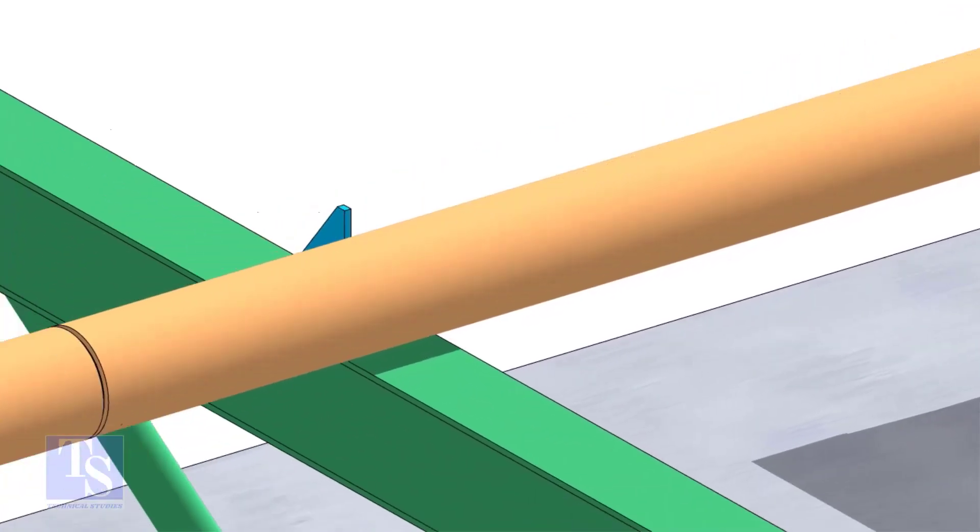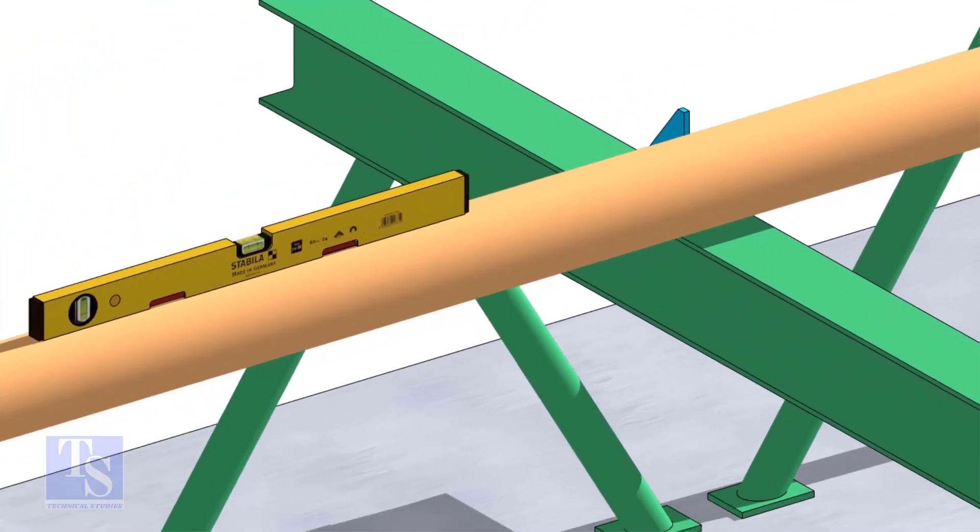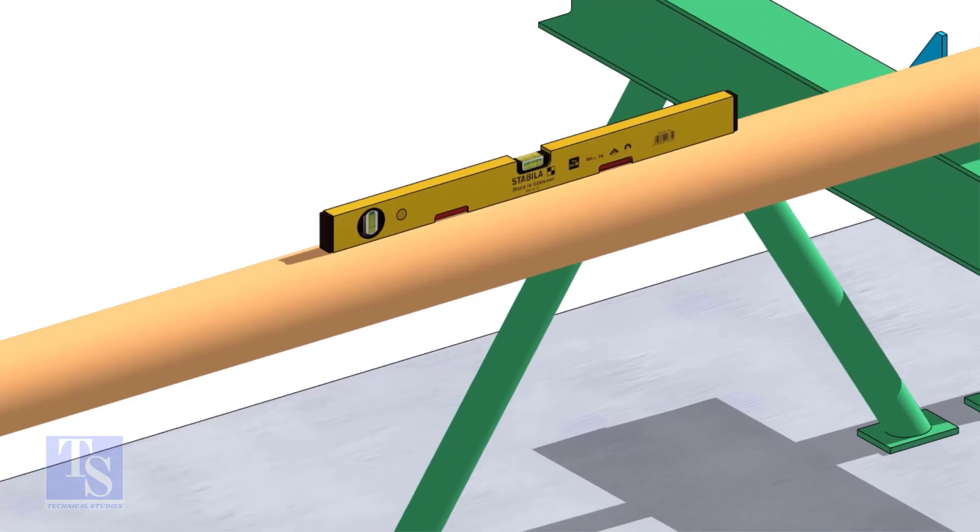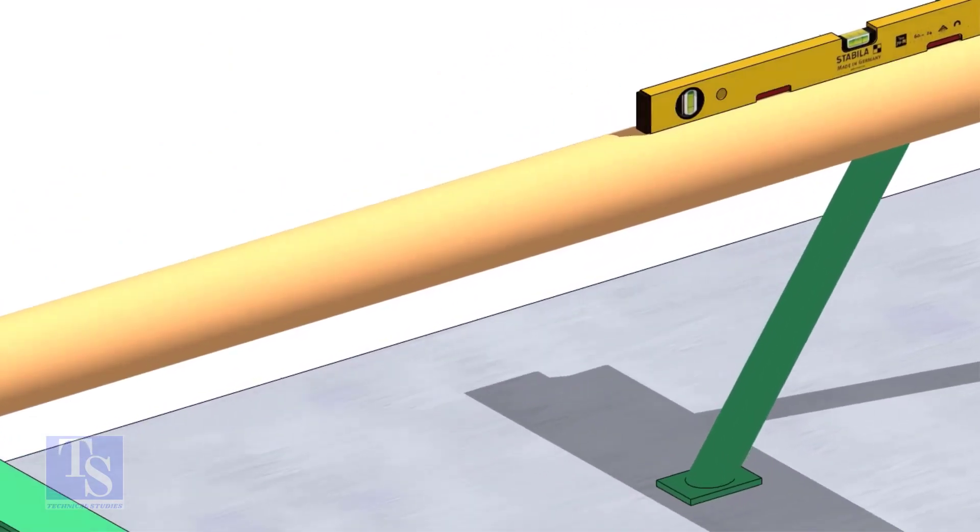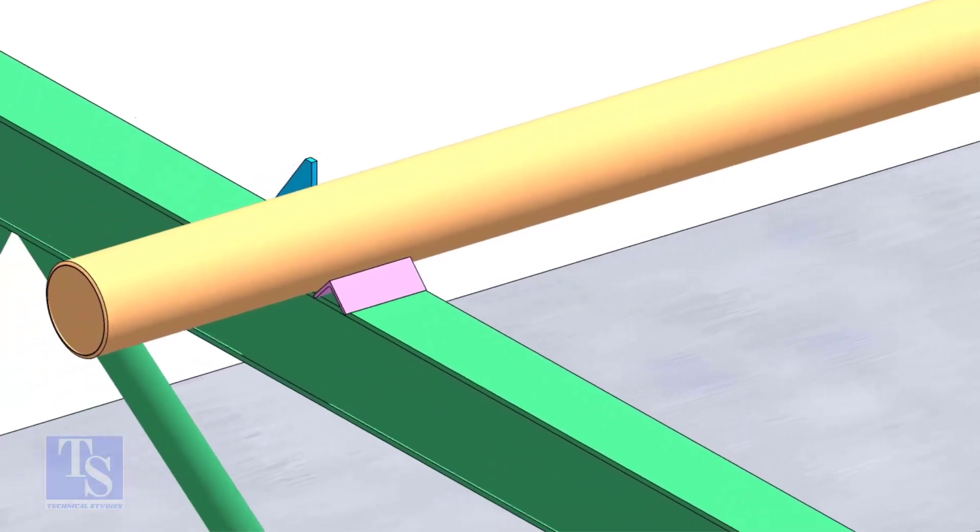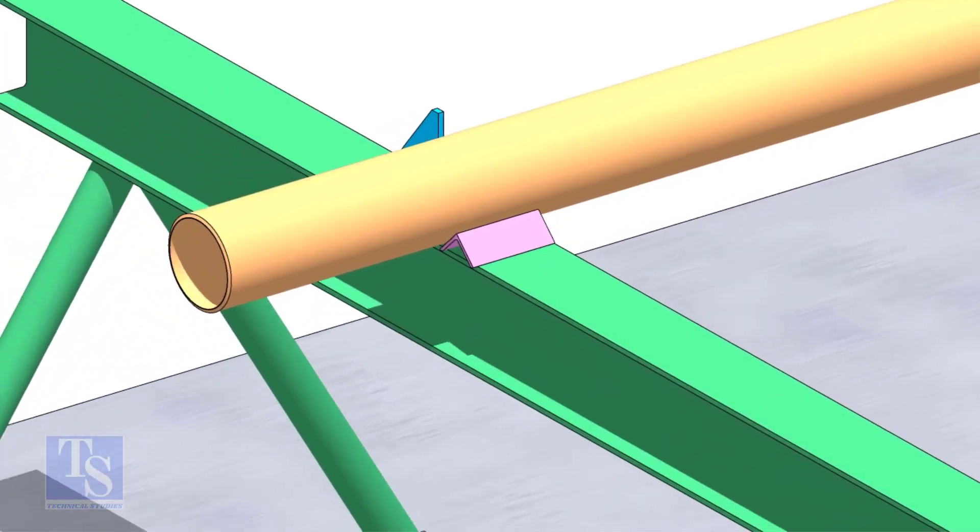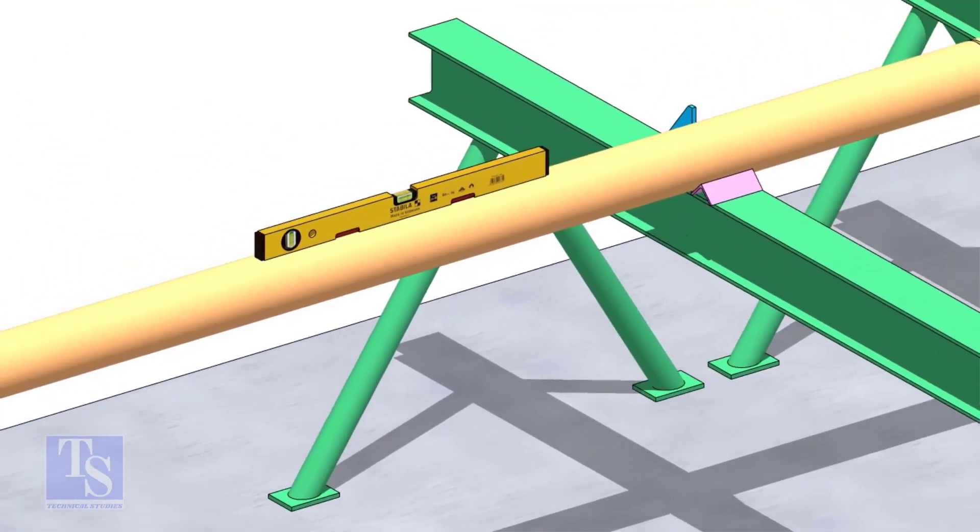You can cross-check the level of the pipes. Arrest the pipes from the other side using wedges or angle stubs.